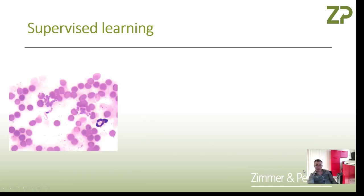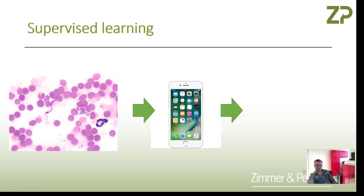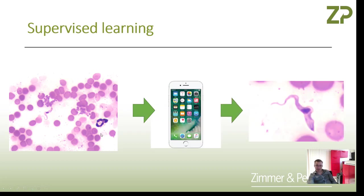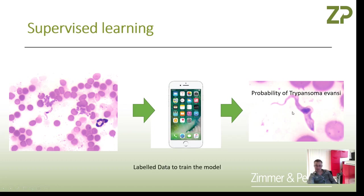With supervised learning, we give the machine an image, the model runs it, and outputs a probability that it is an image of Trypanosoma evansi. We use labeled data to train the model.